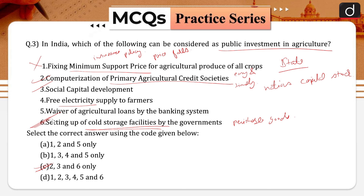Social capital is the value that can be created through networking and trust built within and between people and organizations. Social capital also helps in public investment — so the third statement is correct. Free electricity to farmers, apart from putting financial stress on the state, has resulted in excess use of water, encouragement of installation of more pump sets, and depleting groundwater table. Therefore, the fourth is not correct.